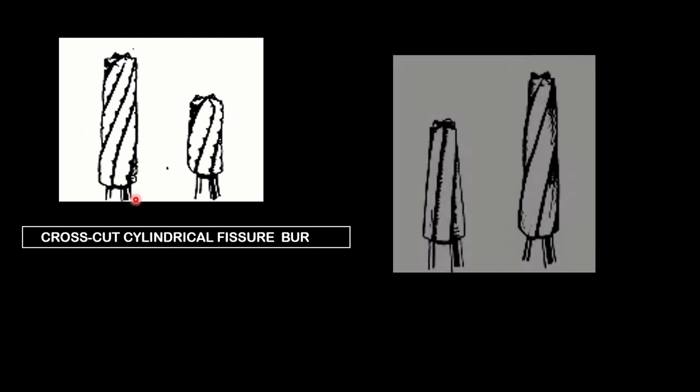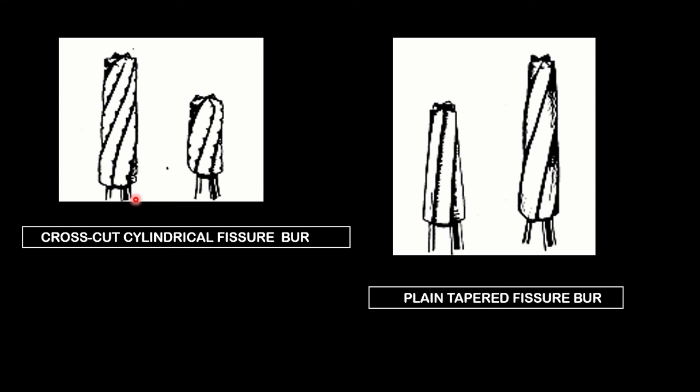The cross-cut cylindrical fissure burs can cut either parallel to the long axis of the bur or obliquely, and they're used for gross cutting and for cavity extensions and creation of walls.